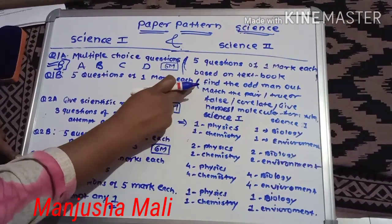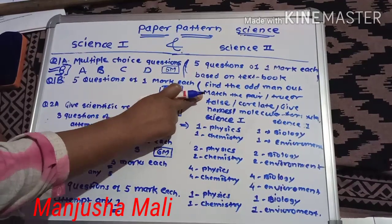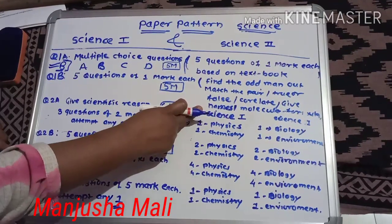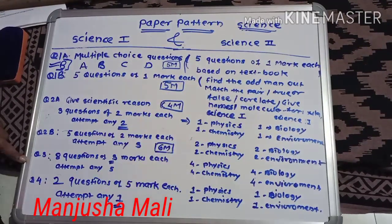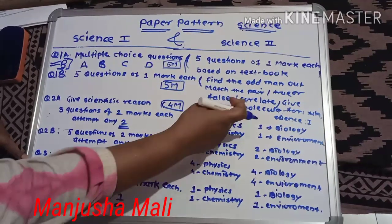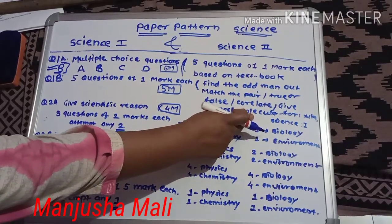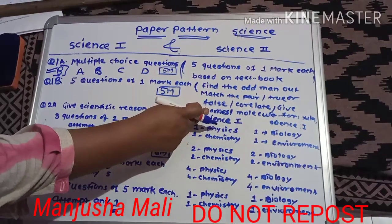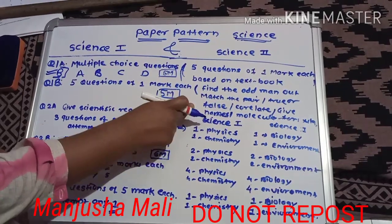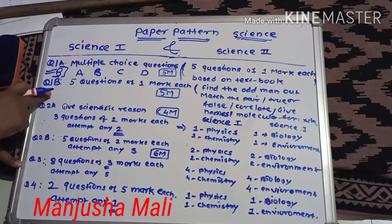Questions like select odd man out, match the pair, true or false, complete the correlation, give names or molecular formulae. If science 1 is there, if science 2 is there, then the question will change. Molecular formula is science 1, names are science 2. Question number 1 is 10 marks.